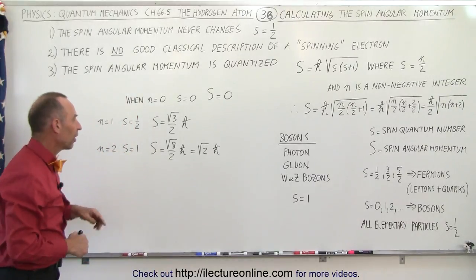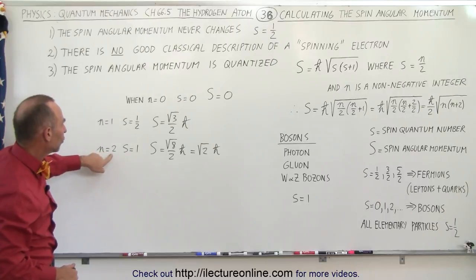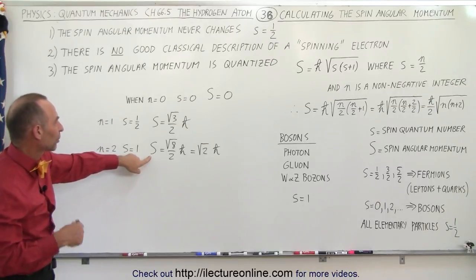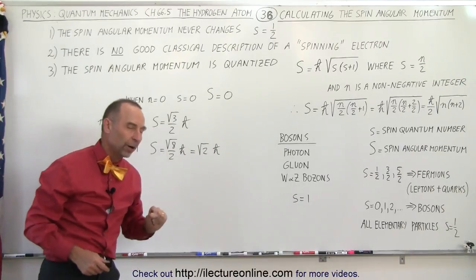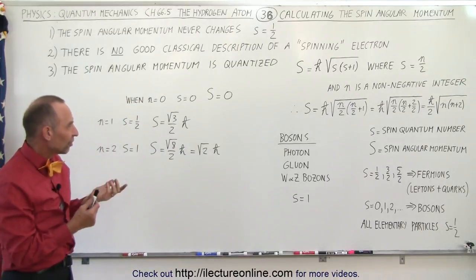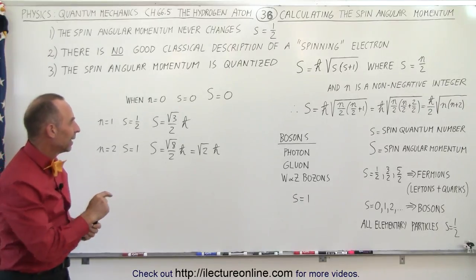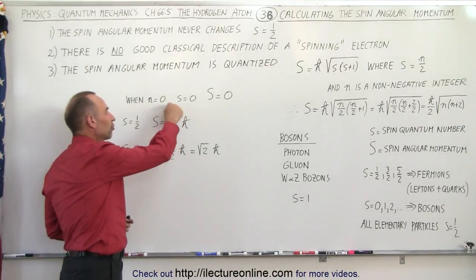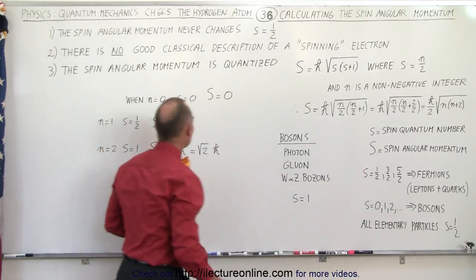And then for bosons that have spin quantum number equals to 1, when n equals 2, notice that the spin angular momentum is the square root of 2 times h-bar. Now what's interesting about this, even though these particles are extremely tiny, there's a very large contribution, relatively speaking, by the spin angular momentum.